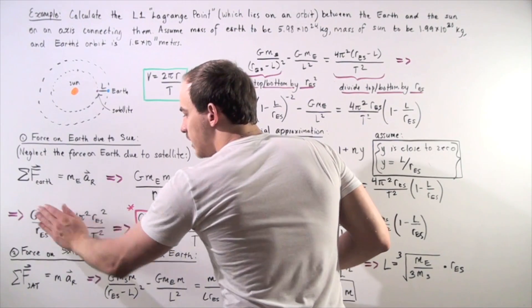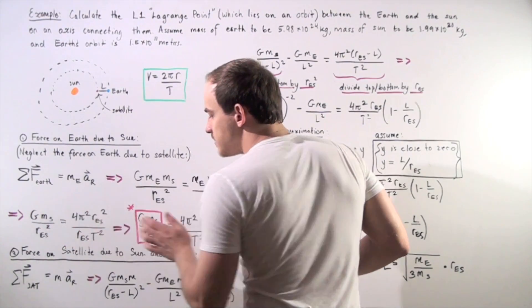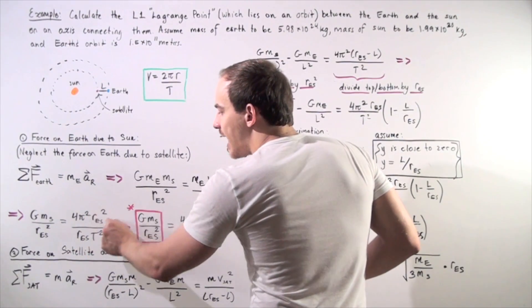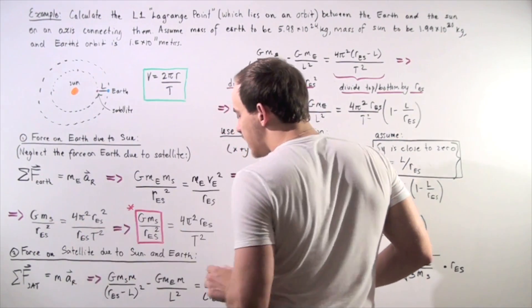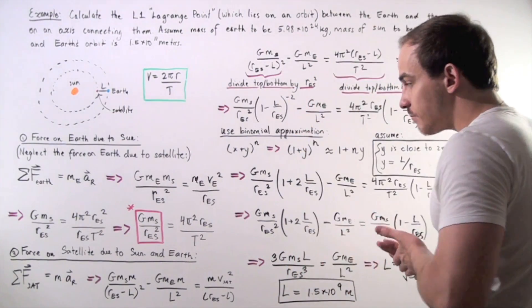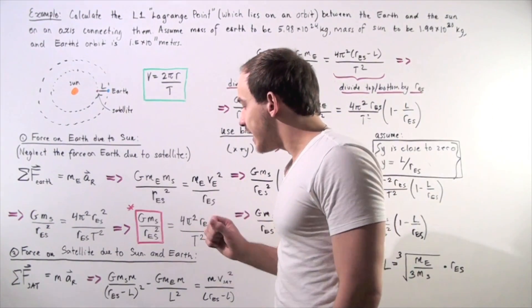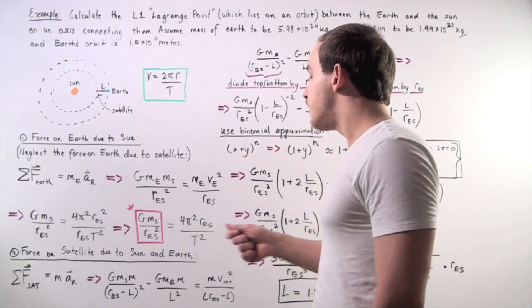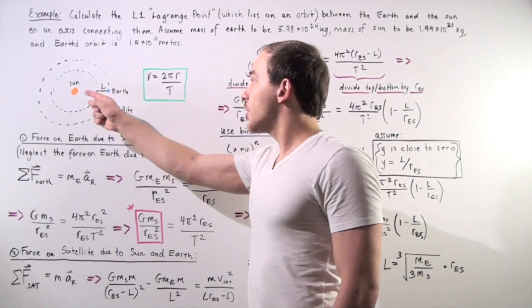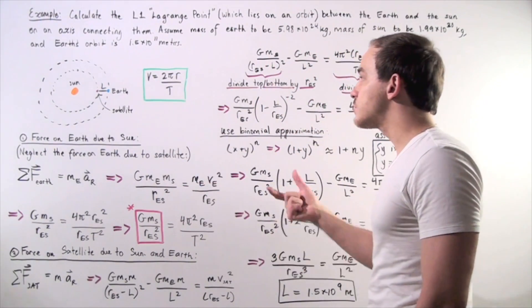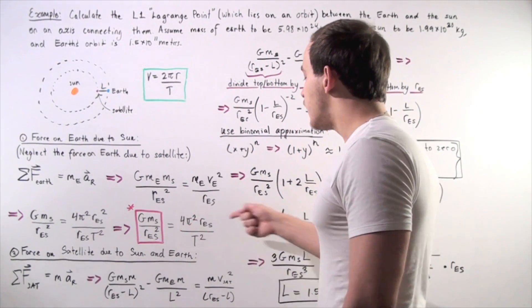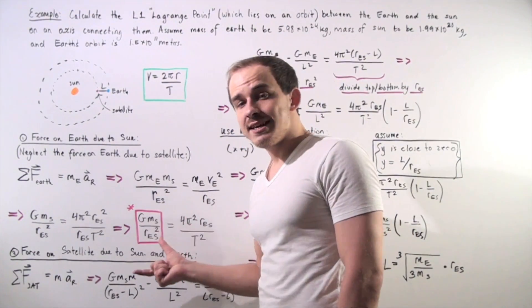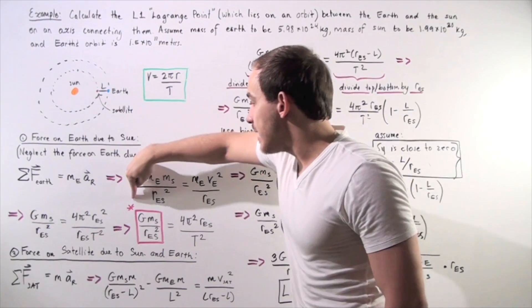After simplification, notice we have one radius on the bottom and two radii on the top, so we cross one out. We arrive at: G times mass of the Sun divided by the radius of the Earth's orbit squared, equals 4π² times the radius of the Earth's orbit divided by the period of the Earth squared. This will come in handy at the end, so I mark it with a star.